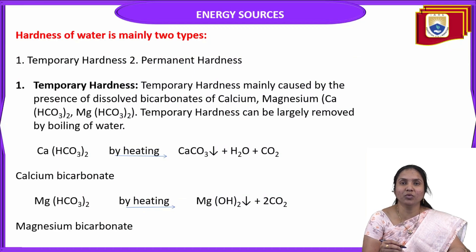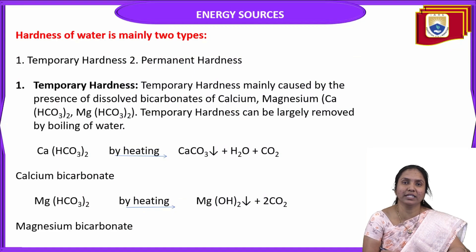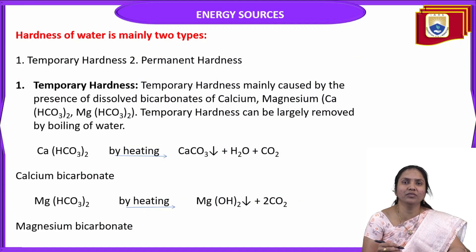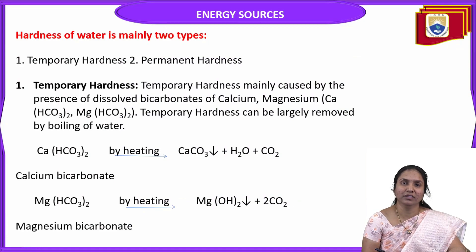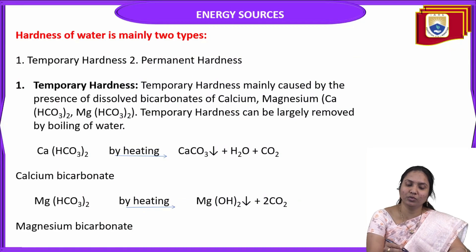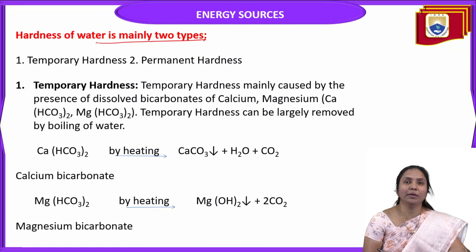Why does this water not produce lather? Because it contains hardness-causing ions like calcium, magnesium bicarbonates, chlorides, sulphates, etc. That is why when we treat it with soap, it doesn't produce lather. There are two types of hard water: temporary hardness of water and permanent hardness of water.